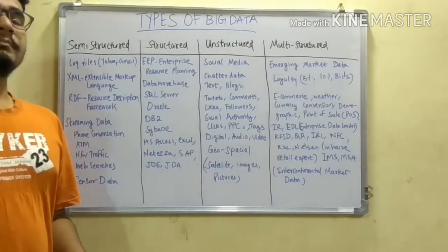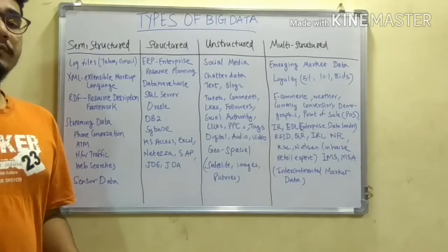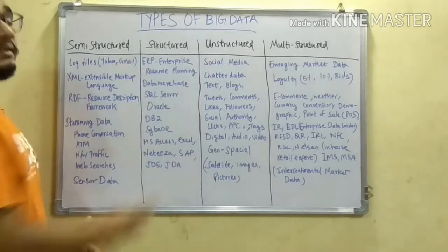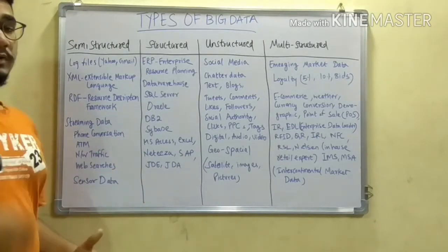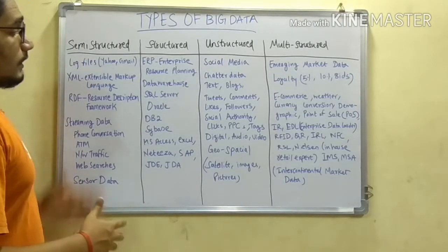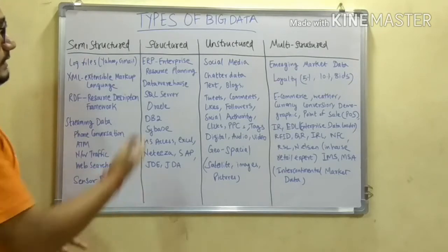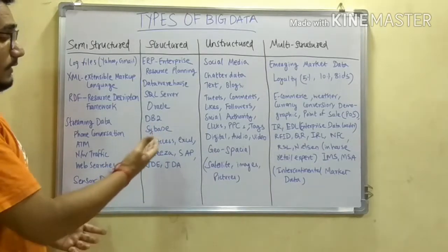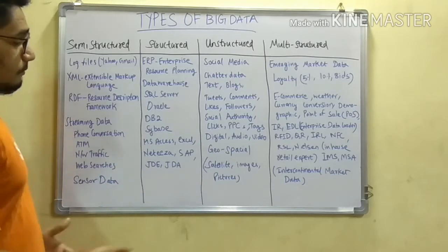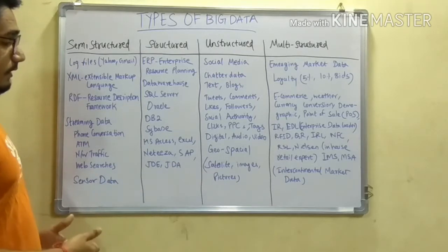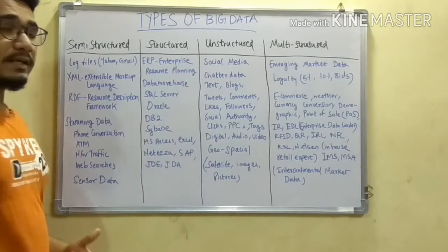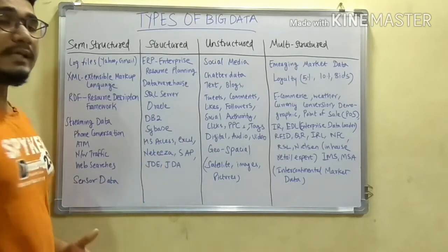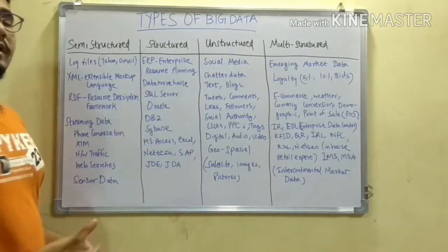Next we move on to structured data, which is in a simple table format. Structured data consists of ERP — Enterprise Resource Planning — data warehouses where entire data is stored, SQL Server for accessing databases, Oracle database, DB2 database, Sybase, MS Access, Excel sheets, Netezza, and SAP — Systems Applications and Products — as well as JDE and JDA. These are all categorized under structured data.